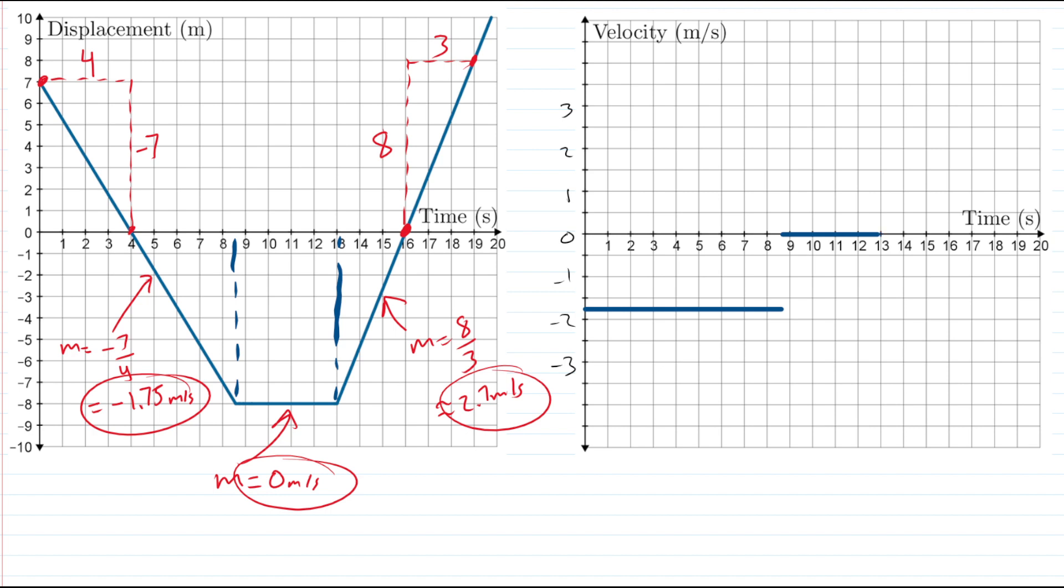And last but not least, we have our 2.7 meters per second for the rest of the graph. So that starts at 13 seconds and goes right to the end of the graph. And that's 2.7, so that's around somewhere around here. And there we go. So that is, based on the graph we were given, quite an acceptable velocity-time graph.